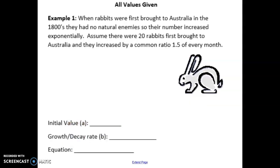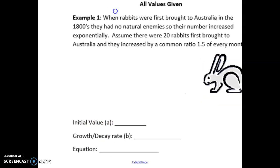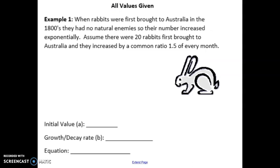The first one we're going to look at is what happens when all of the values are given to you. That's what it says here at the top. All the values are given.